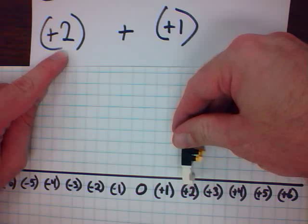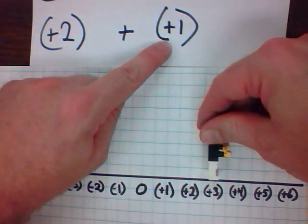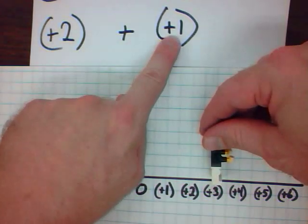He's going to face that way. And, he's facing positive numbers, he takes one step forward. Look. The answer is positive three. Which is, of course, two plus one.